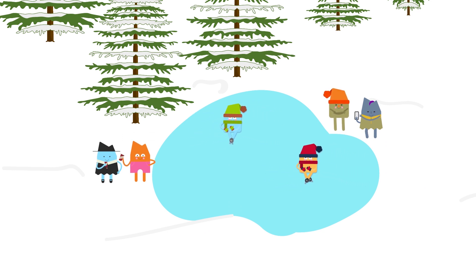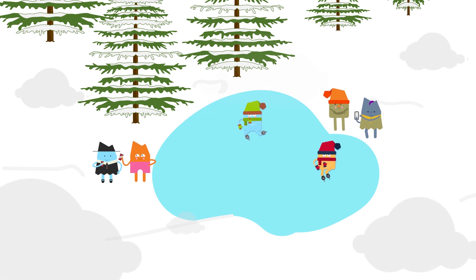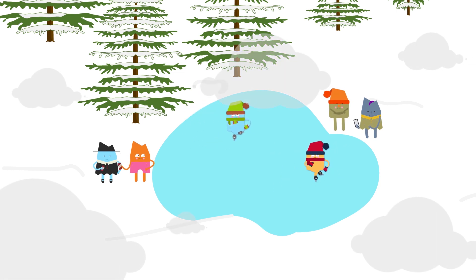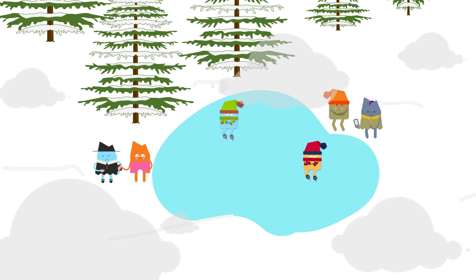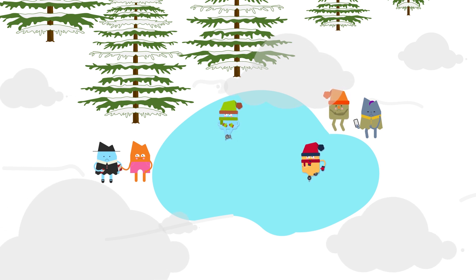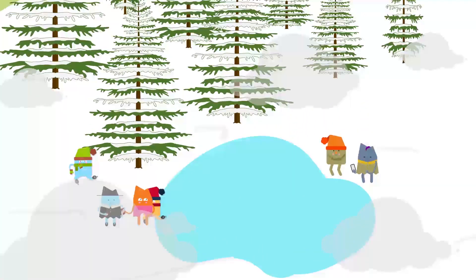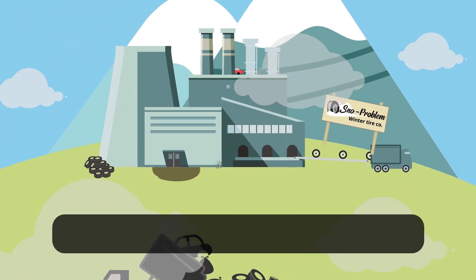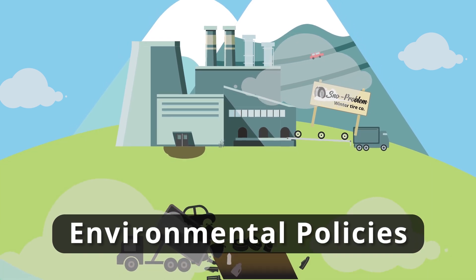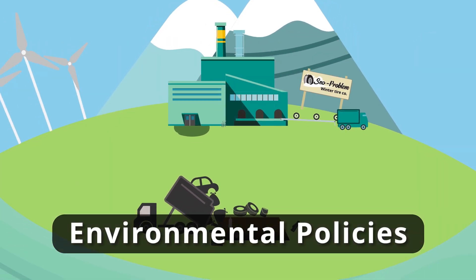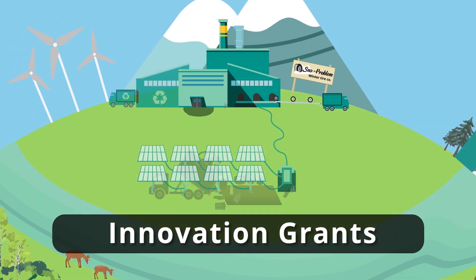From an economic perspective, that means some of the costs of the production and use of snow tires has been shifted from the company and consumers to society as a whole. If the snow tire company's production and disposal of tires is releasing pollutants into the air, and society has an interest in correcting that, there are a number of policy options that can help. Government can play a role in addressing the negative spillover costs that can come with externalities.